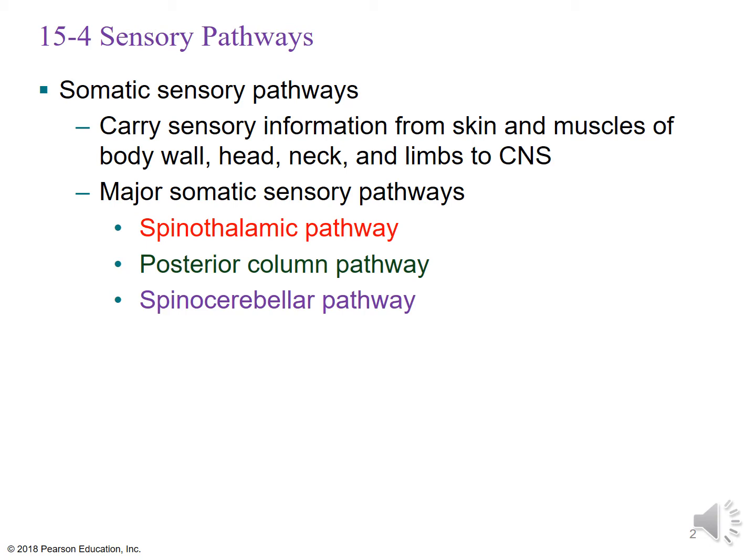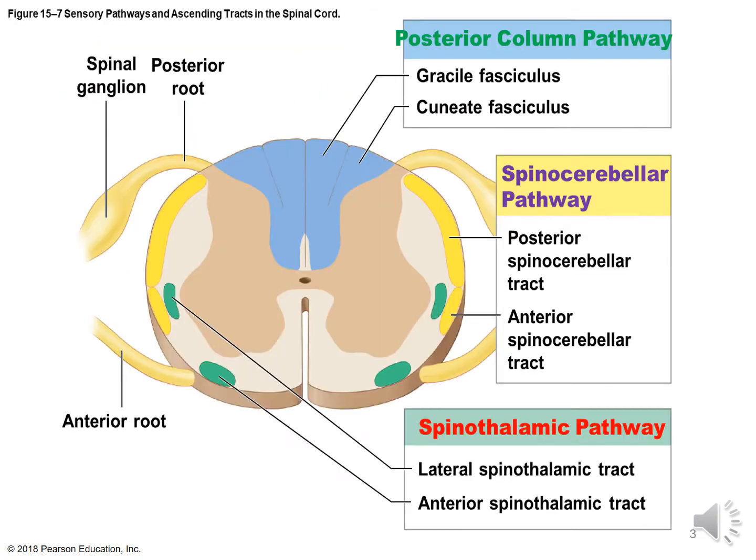Whenever you look at these pathways, the words tell you where they're going. The spinal thalamic is an ascending pathway going from the spine up to the thalamus in the brain. The posterior column pathway runs in the dorsal aspect of the spinal cord, and the spinal cerebellar pathway ascends from the spine up to the cerebellum.